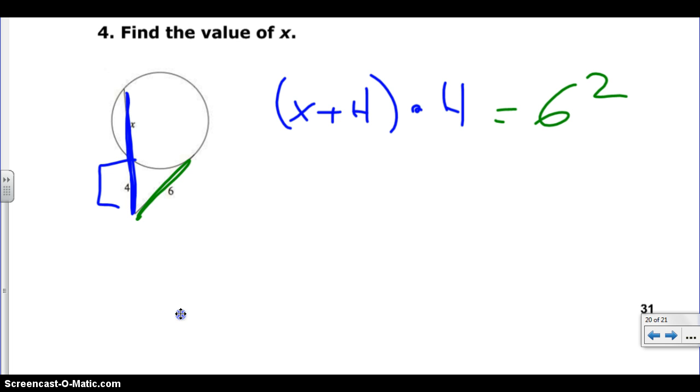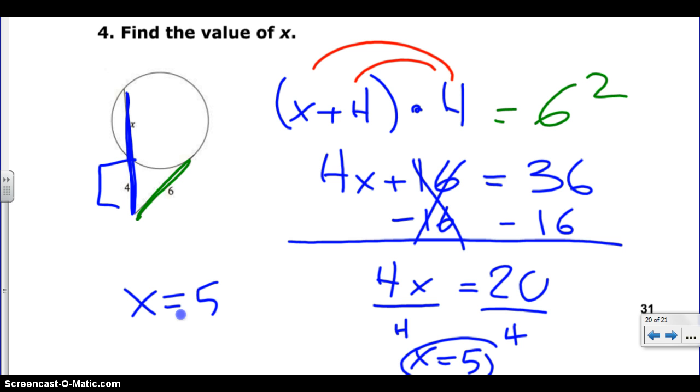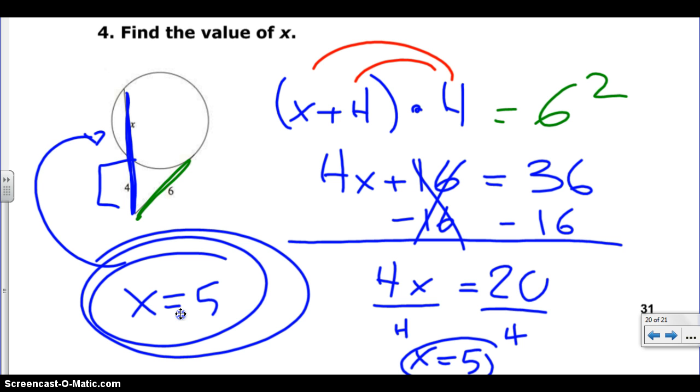All right. And so remember, we still have to distribute whether it's a variable or a number. So when we do 4 times X and 4 times 4, we're going to get 4X plus 16 equals 36. When we subtract 16 on both sides, we're going to get 4X, once those beautifully go away, equals 20. And then we just divide by 4 on both sides, and we get X equals 5, which is 5. Very good. Nice job. And if they were to ask you to find the length of that piece, you'd just plug in 5 for X, and you'd get 5 plus 4 is 9.